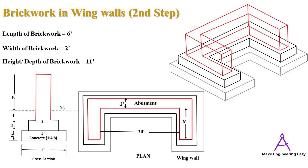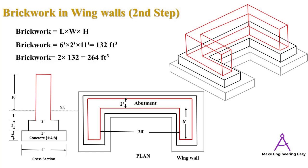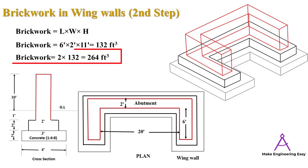For the second step of brickwork in wing walls, we need the length, width, and height of the brickwork. Multiplying length × width × height gives 132 cubic feet for one wing wall in the second step. Multiplying by two gives a total quantity of brickwork in the second step for both wing walls equal to 264 cubic feet.